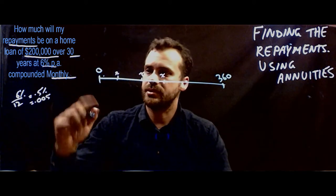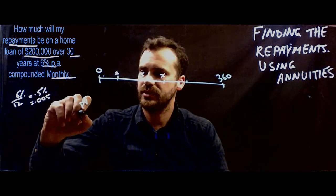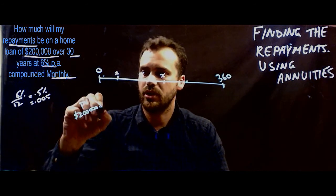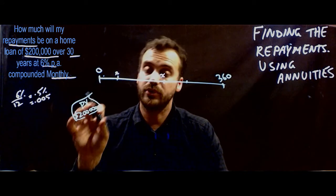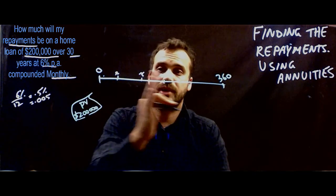Now what we do know is the present value. The present value of this thing is $200,000, i.e. you borrowed $200,000 so you could buy your house. And we need to know the value of those payments,